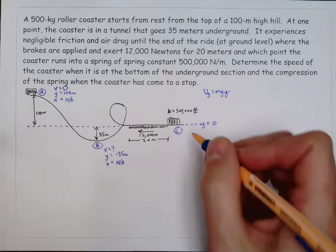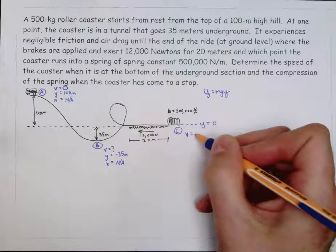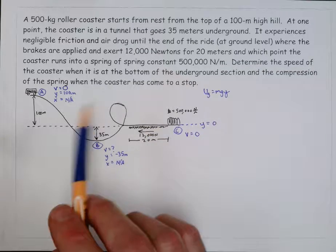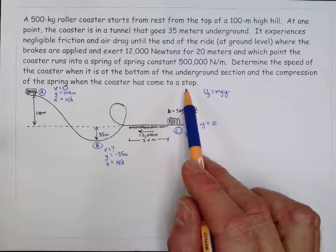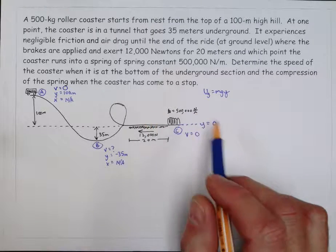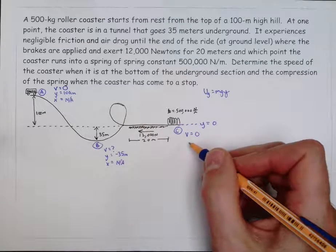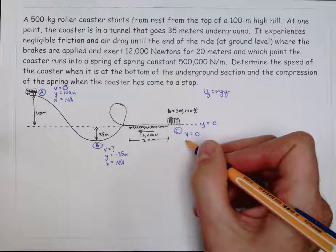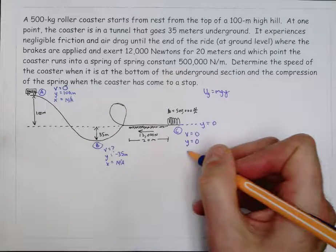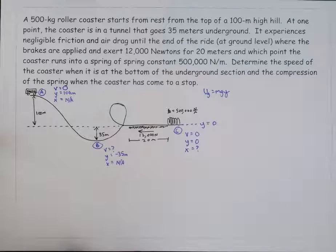Finally, at c, the speed is back to zero because it says find the compression of the spring when the coaster has come to a stop, momentarily come to a stop. I say momentarily because it will bounce back the other way. And I probably should have written the word momentarily in the statement of the problem there. The y coordinate there is zero. And x, that is an unknown. That's something that we're trying to find out.